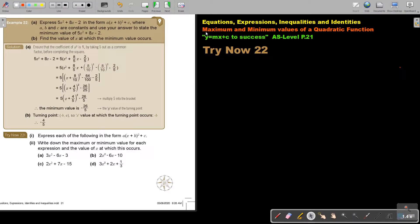In this video, we will continue with maximum and minimum values of a quadratic function. You will find this on page 21 in the Namibia AS level mathematics textbook, y equals mx plus c to 6s.